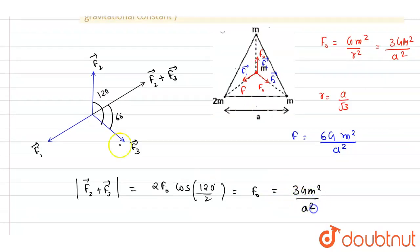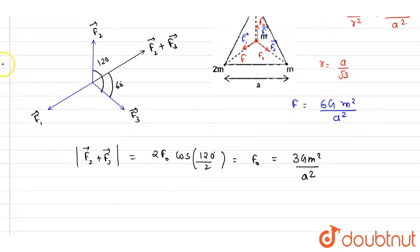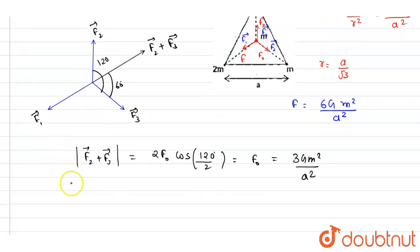Now these two are antiparallel: f1 and these two. So if you see, if I write down the magnitude of these three, as you can see that f2 plus f3 is antiparallel to f1, so we'll just subtract and we'll get the answer.